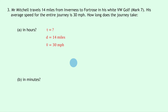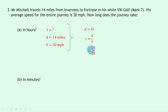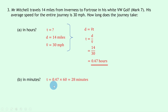We're not going to convert anything to meters and seconds here. Writing down our equation for average speed: d equals v-bar times t. Rearranging for t, we divide both sides by v-bar to get t equals d over v-bar. Substituting in the numbers gives us 14 divided by 30, which gives an answer of roughly 0.47 hours — just under half an hour. To convert to minutes, we take 0.47 hours and multiply by 60, giving an answer of 28 minutes.